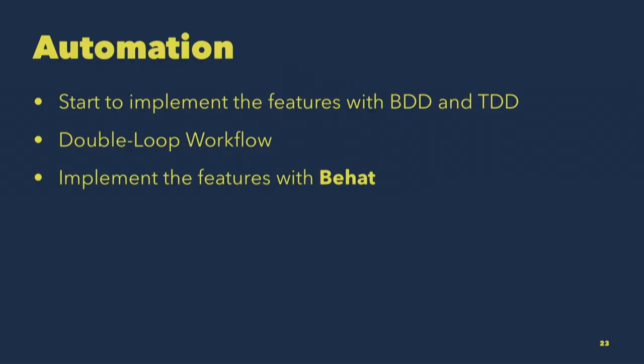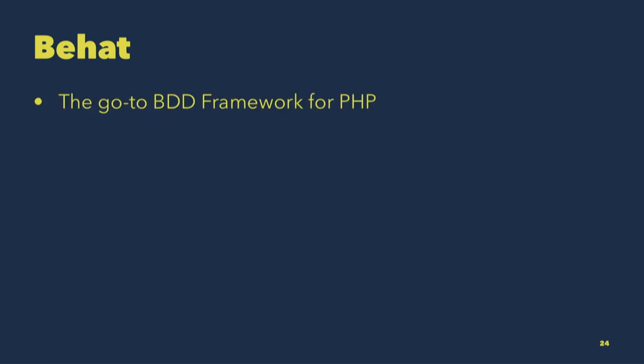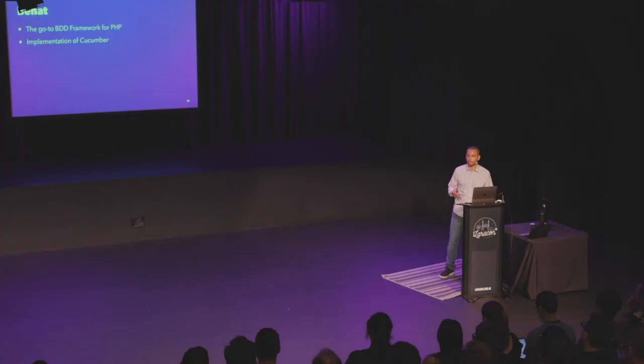In my resources at the end, there's going to be a link called 'double loop workflow by Jessica Maraghan' — it's an excellent resource to understand this, so I wanted to shout her out. We're going to implement our features using Behat. Behat is the go-to BDD framework for PHP. It's an implementation of Cucumber, which was originally written in Ruby to do BDD, and now there are implementations in all the major languages — Behat is the one we use in PHP.